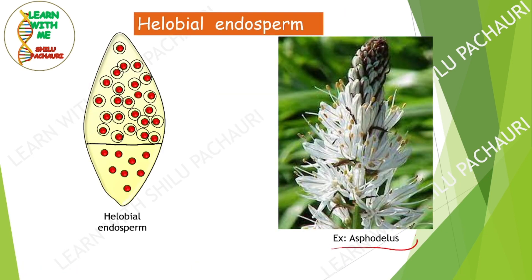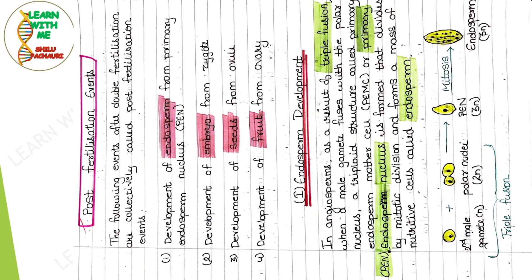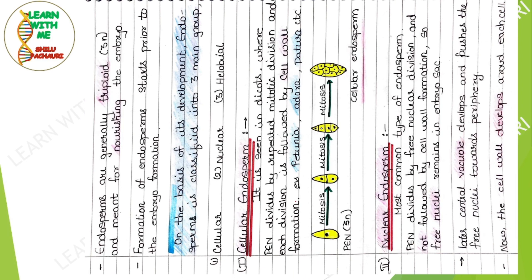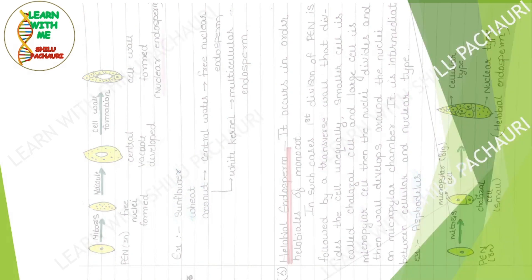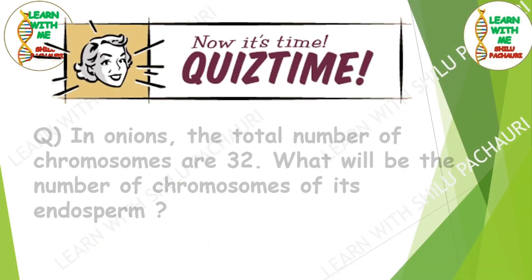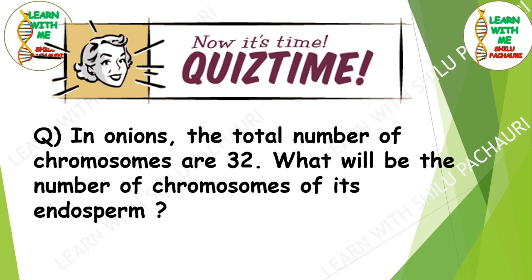An example of a plant showing halobial type of endosperm is Asphodelus. These are the handwritten notes on post-fertilization events covering endosperm development — if you want these notes in PDF format, you can join our Telegram channel, the link for which is in the description box. Now it's quiz time: In onions, the total number of chromosomes is 32 — so what will be the number of chromosomes in its endosperm? Hint: endosperms are triploid in nature.